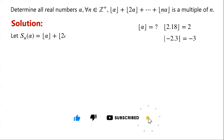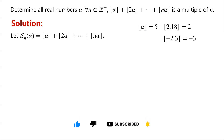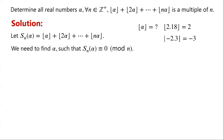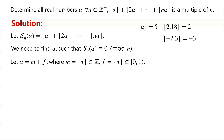We let S_n(α) equal the given algebraic expression. We need to find α such that S_n(α) is congruent to 0 modulo n. We let α equal m plus f, where m is floor(α), which is an integer, and f is the fractional part of α, which satisfies 0 ≤ f < 1. For example, 2.68 can be written as 2 plus 0.68.